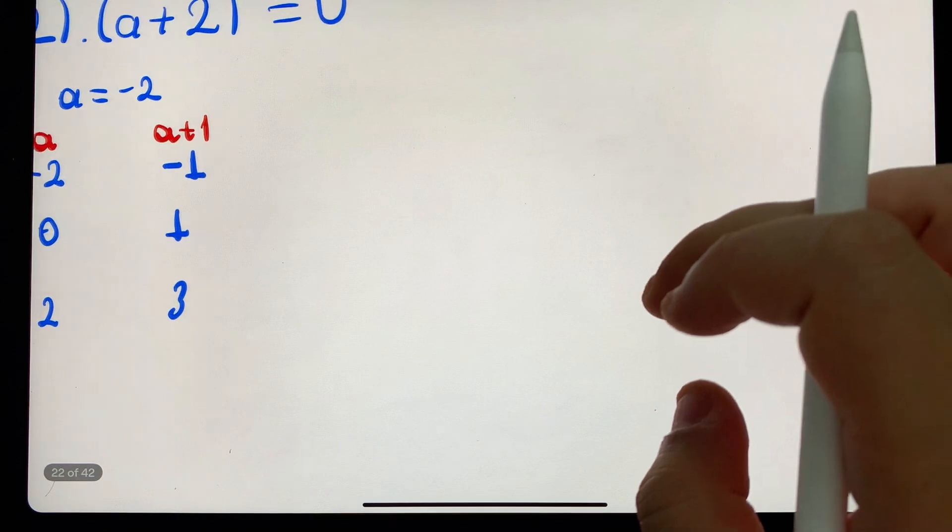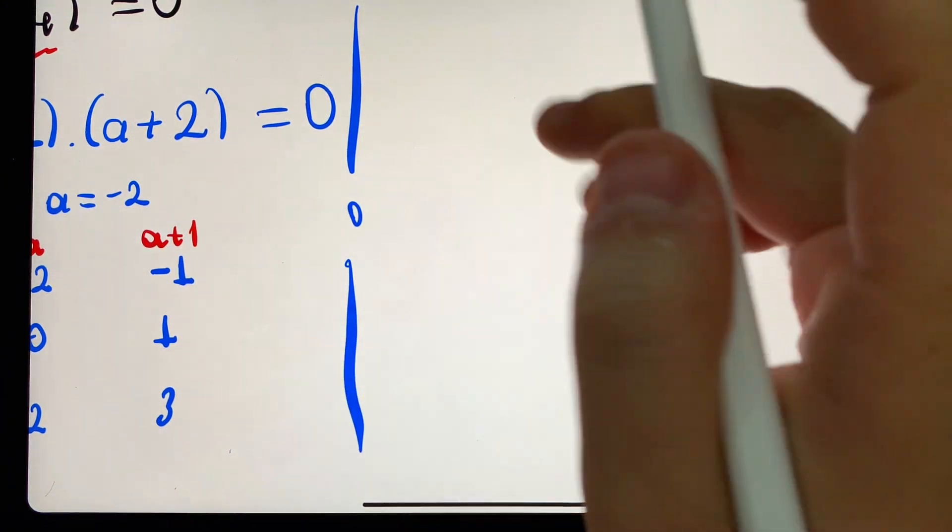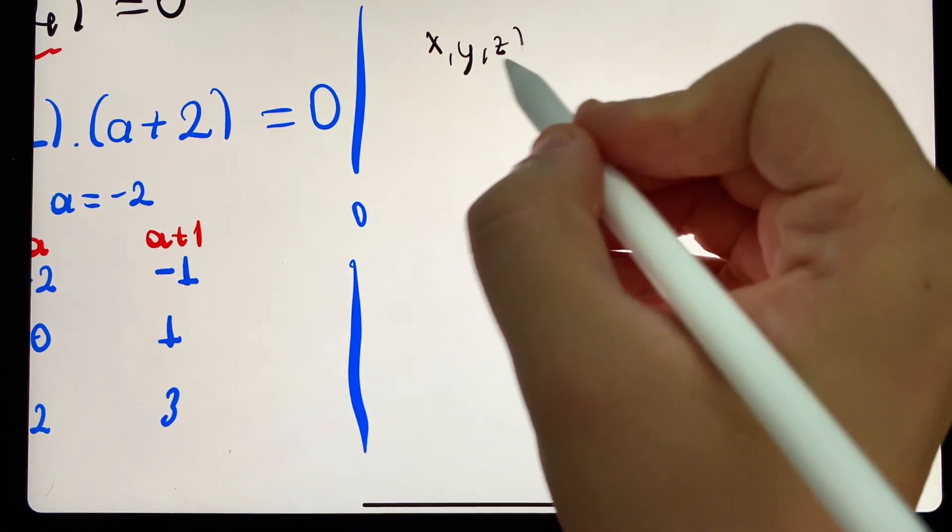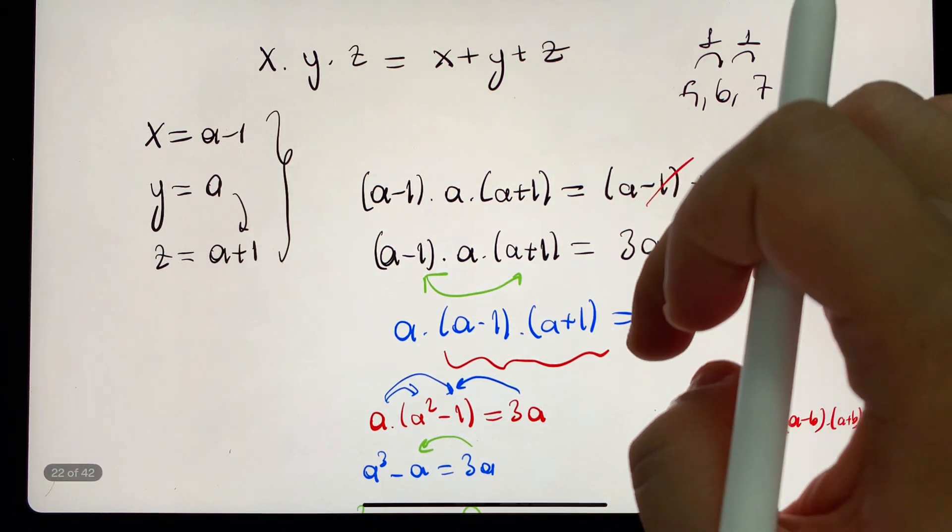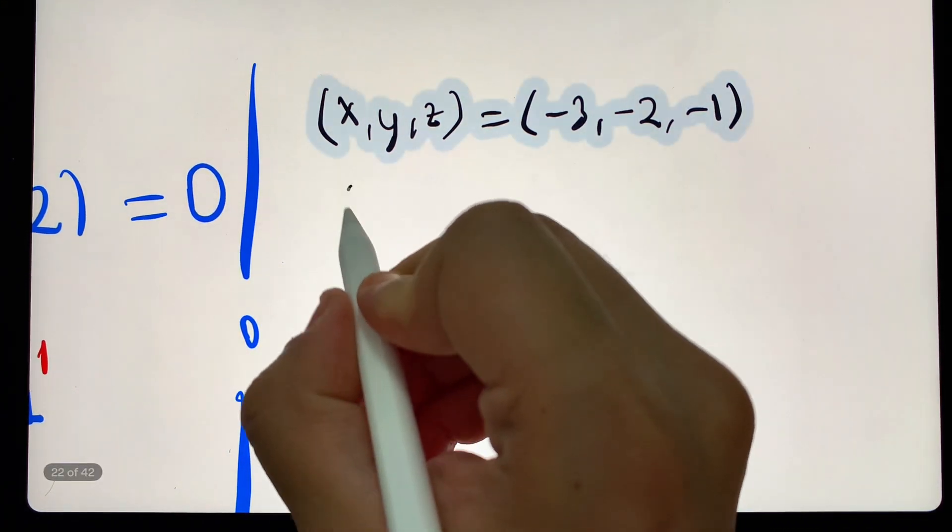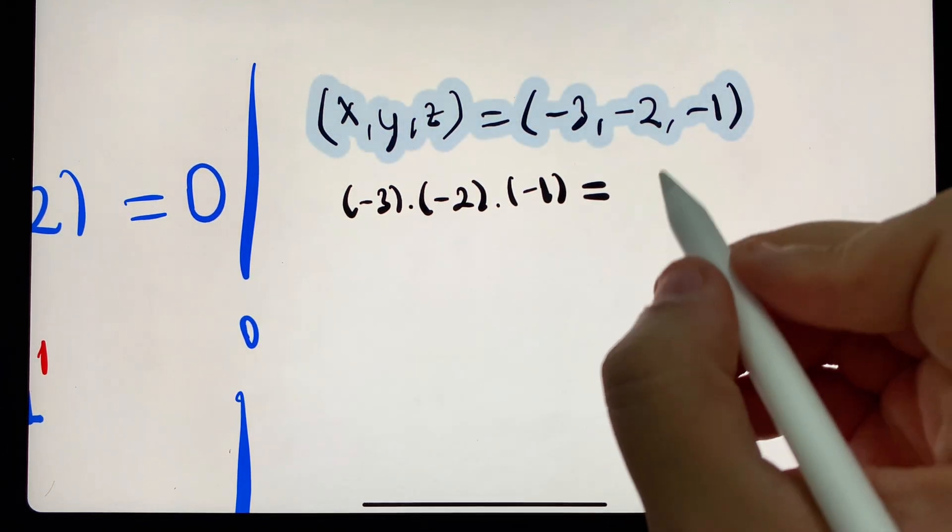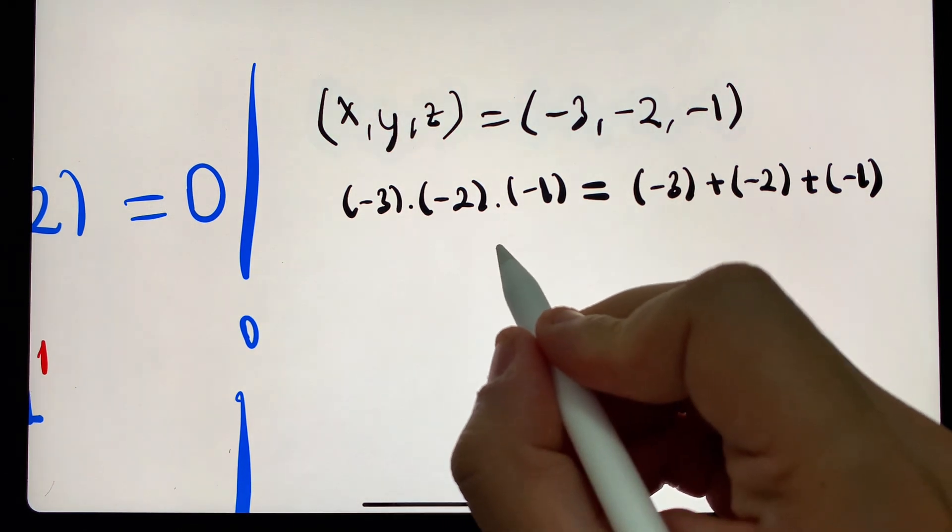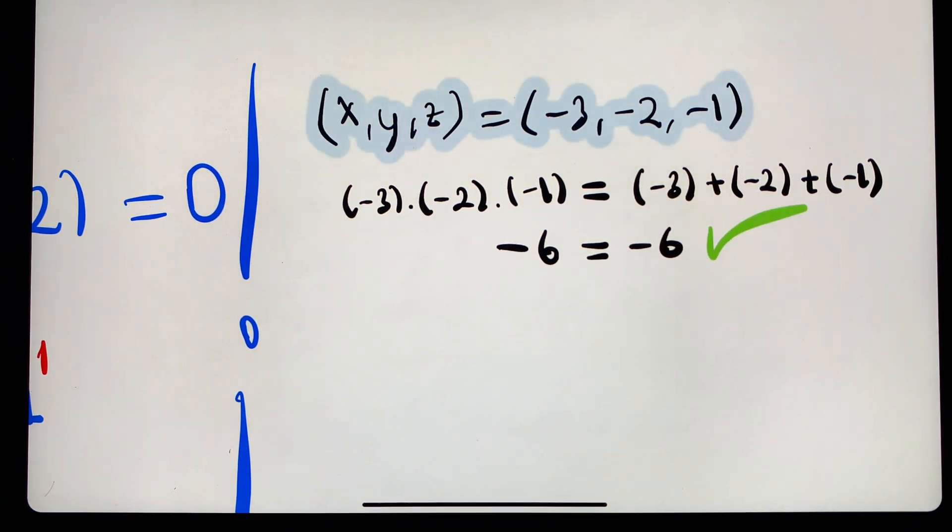These consecutive numbers we found, what should we do if they all meet the equation separately? We need to prove. Who is the first trio we found here? Minus 3, -2, -1. So if I say x, y, z is equal to -3, -2, -1, what should I do with the initial problem? I need to write instead. What was our initial problem? Is the product of the numbers equal to their sum? So -3 times -2 times -1 equals -3 plus -2 plus -1. What will come if we multiply? -6. What will come if we add here? -6 came again. So he provided the equality.